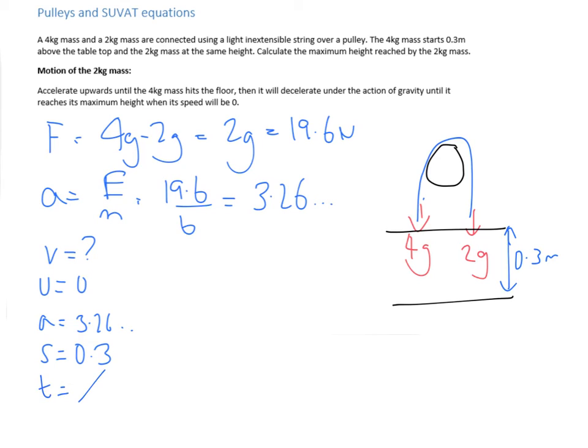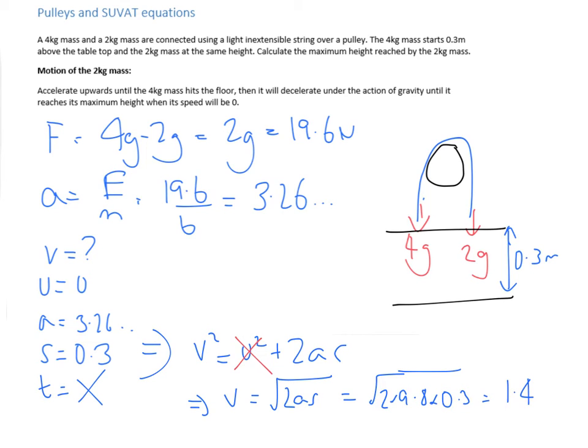Which means we're going to use this doozy of an equation right here. We can eliminate that straight away because u is 0. Which means we get v equals square root of 2as. If we plug the numbers in, the square root of 2 times 9.8 times 0.3 equals 1.4 metres per second. This is how fast the 2kg mass is going when the 4kg one hits the floor.